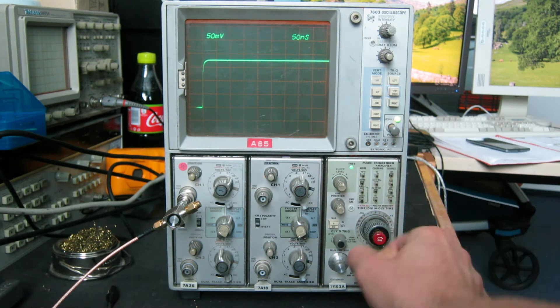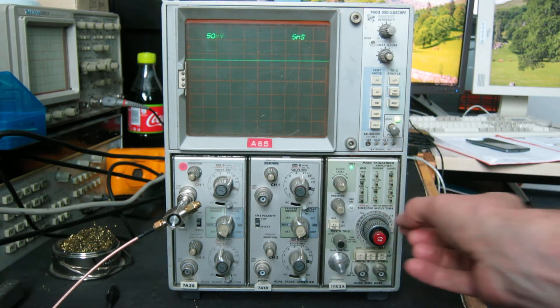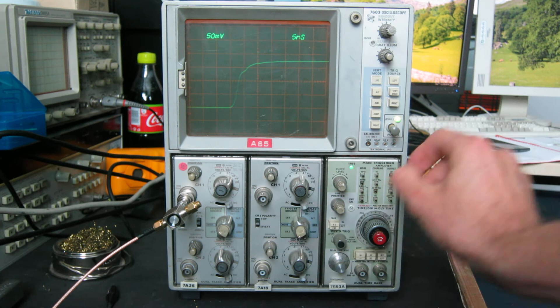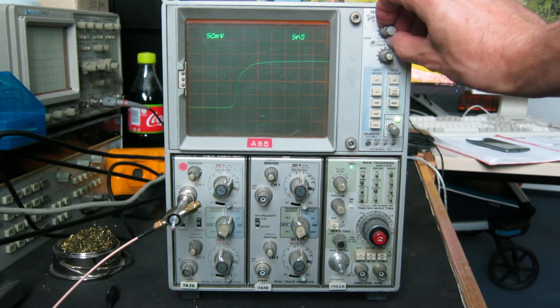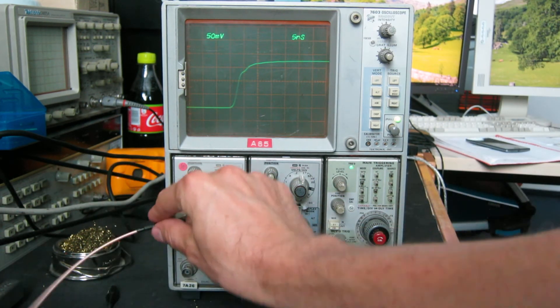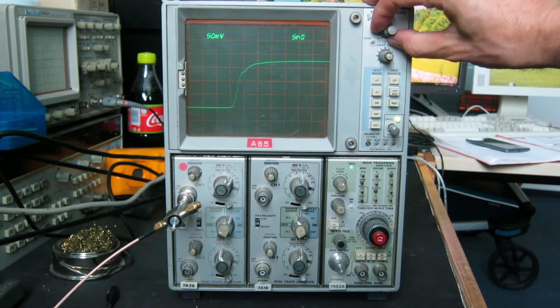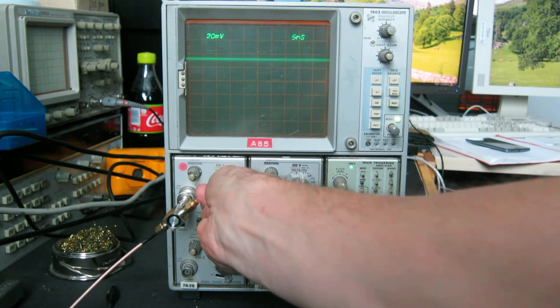There we go. That's at 50 nanoseconds per centimeter. We'll speed it up even further to 5 nanoseconds per division. And if you can see that, I'll crank up the intensity a bit. Yeah. So the pulse shape isn't perfect because the wiring's not great.